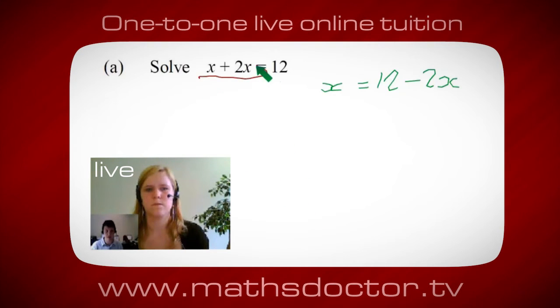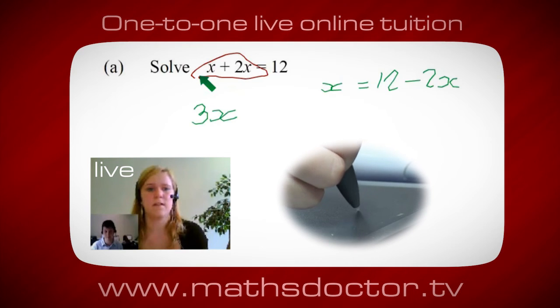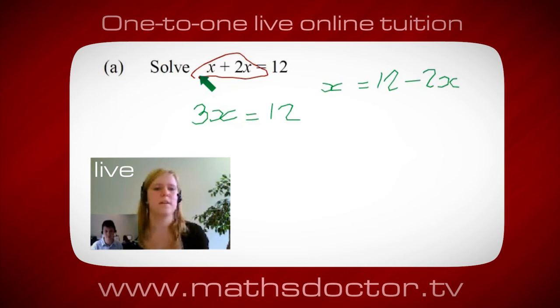Oh, OK, it's 3x, isn't it? Yeah, absolutely. So, 3x equals 12. Oh, and so x equals 4. Brilliant, spot on, well done.